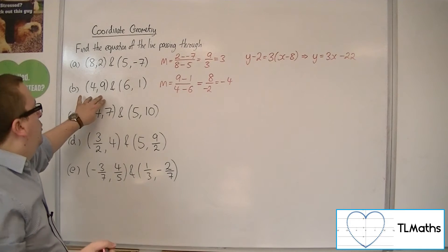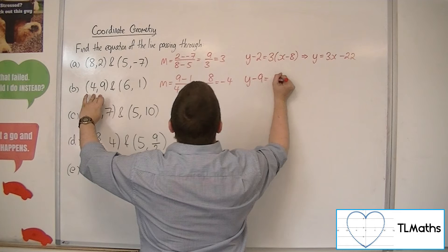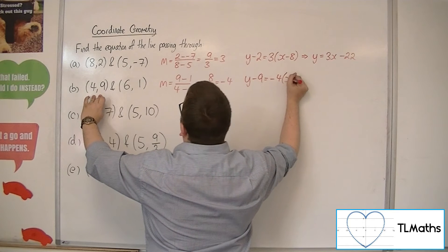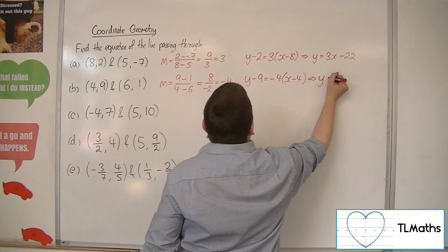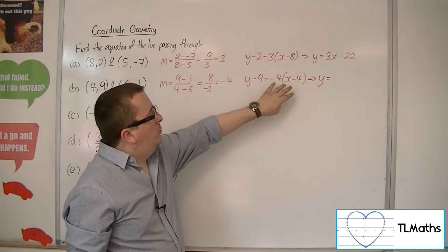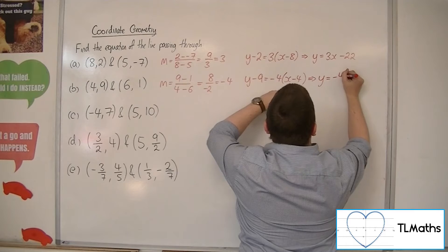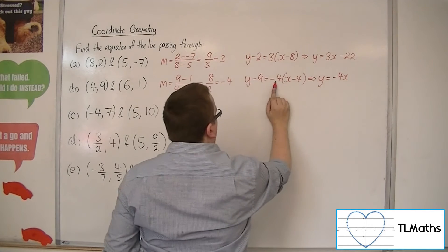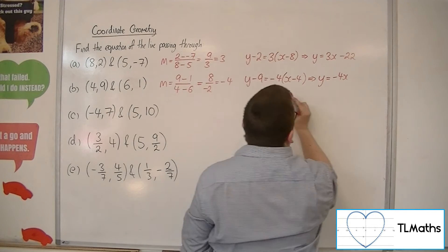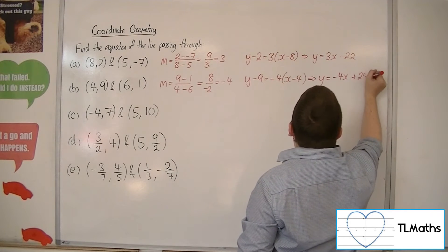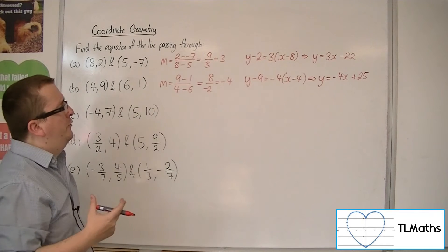So we'll have 8 in the numerator, minus 2 in the denominator, so the gradient is minus 4. So if we use (4, 9) as x1, y1, we'll have y minus 9 is equal to minus 4 lots of x minus 4. Multiplying out this bracket: minus 4 times x gives minus 4x, then minus 4 times minus 4 gives 16. Adding the 9 to both sides gives 25, so y equals minus 4x plus 25.